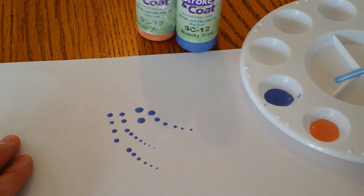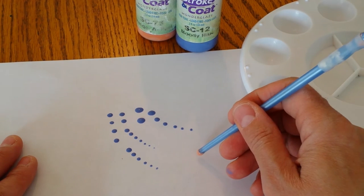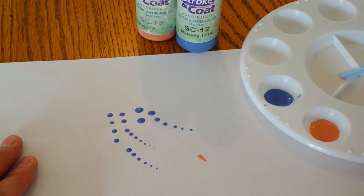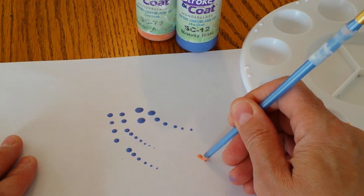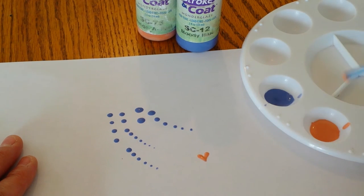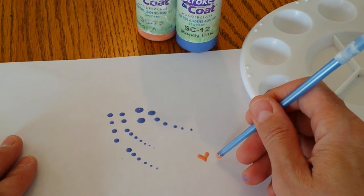Now to hearts. Again, add some paint to the end of your paintbrush. This time we can imagine we're drawing a letter V, starting at the top and down to the point. And that will join up together to make a really cute little heart.